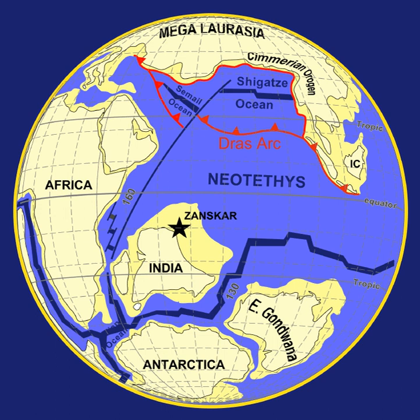The Triassic period extends from about 252.17±0.06 to 201.3±0.2 Ma. During the Triassic, almost all the Earth's land mass was concentrated into a single supercontinent centered more or less on the equator, called Pangaea. This took the form of a giant Pac-Man shape with an east-facing mouth constituting the Tethys Sea, a vast gulf that opened farther westward in the mid-Triassic at the expense of the shrinking Paleo-Tethys Ocean. The remainder was the world ocean known as Panthalassa. All the deep ocean sediments laid down during the Triassic have disappeared through subduction of oceanic plates; thus, very little is known of the Triassic open ocean.